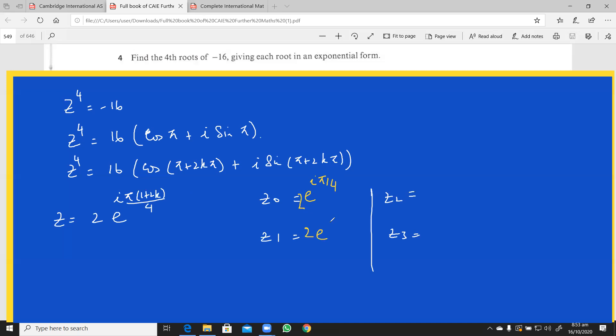This is 2 e raised to the power iota 3 π by 4. So it's 2 e raised to the power iota. I can write this mentally. I don't even need to look at this. So it's 2 e raised to the power iota 7 π by 4.